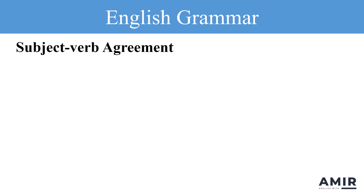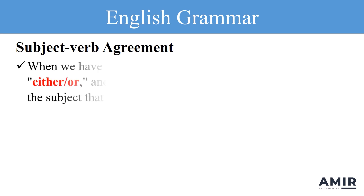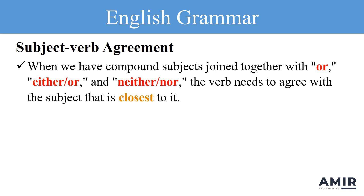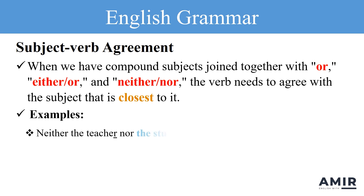When we use compound subjects in sentences, it's important to make sure that the verb agrees with the compound subject in terms of number. When we have compound subjects joined together with or, either or, and neither nor, the verb needs to agree with the subject that is closest to it. For example, neither the teacher nor the student is happy about the test. Here, the verb is agrees with the subject closest to it, which is the student.